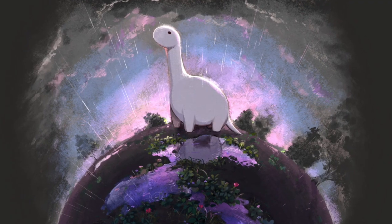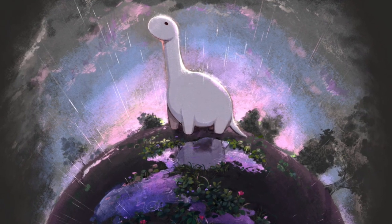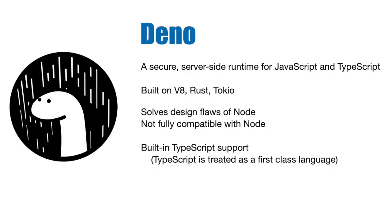Hi, I'm Joe James, and I'm here today to talk to you about Dino. Dino is a secure server-side Java and TypeScript runtime. Dino is built on Java V8, Rust, and Tokyo. Rust is the primary programming language that Dino is built on, and Java V8 is the version of Java that Dino now supports.